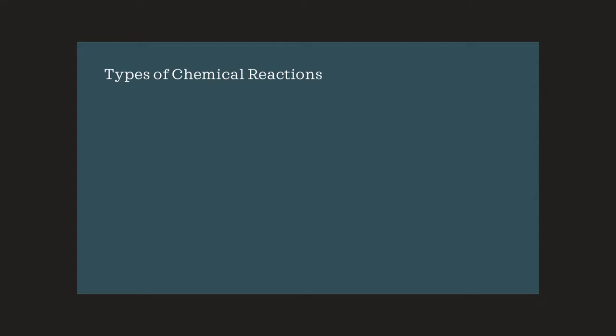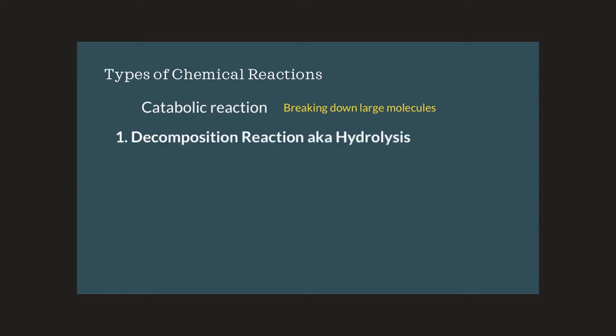Let's get into the types of chemical reactions. We're going to talk about four different types: one is catabolism, two is anabolism, and then two others that occur throughout the body. This builds the basis for anatomy and physiology because these concepts are going to come up again later. The first type of reaction is a catabolic reaction — taking large molecules and breaking them down into two or more smaller ones. This type of chemical reaction is referred to as a decomposition reaction, also referred to as hydrolysis.